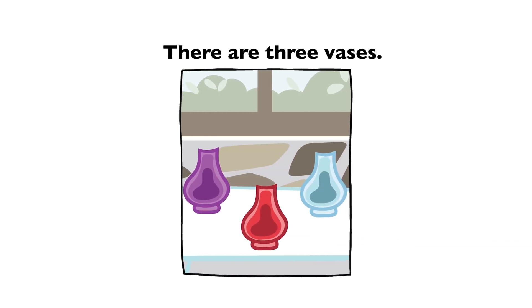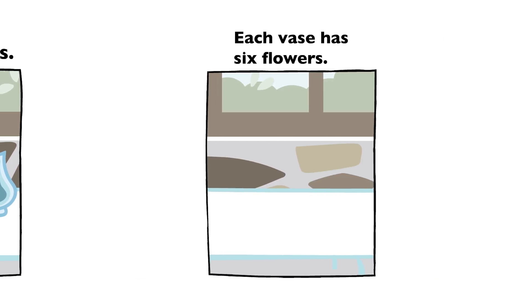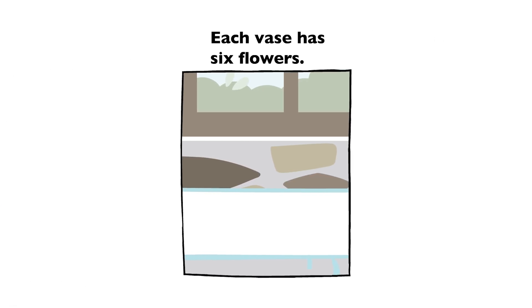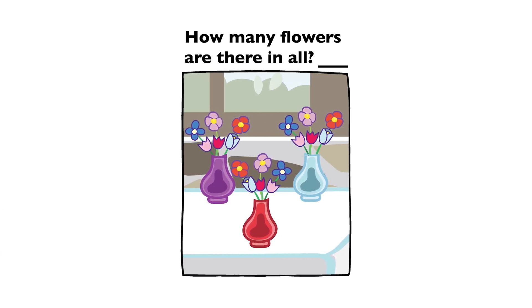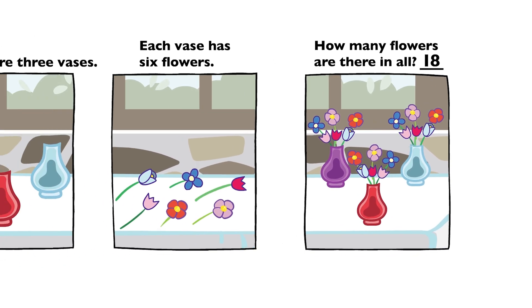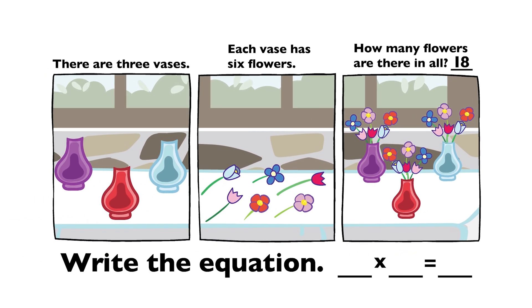There are three vases. Each vase has six flowers. How many flowers are there in all? Eighteen. Three times six equals eighteen.